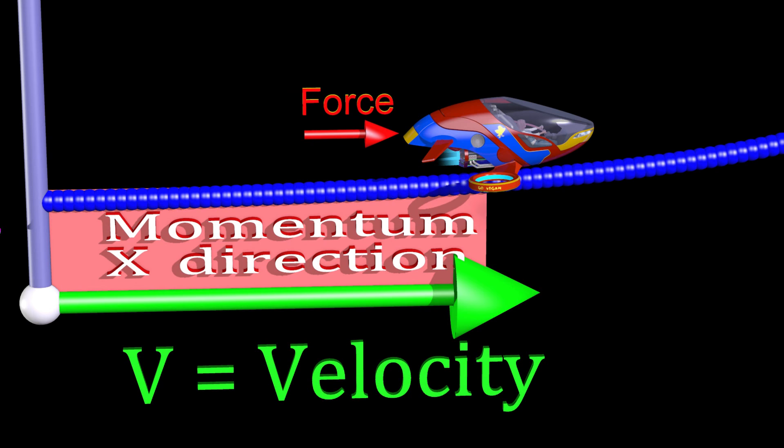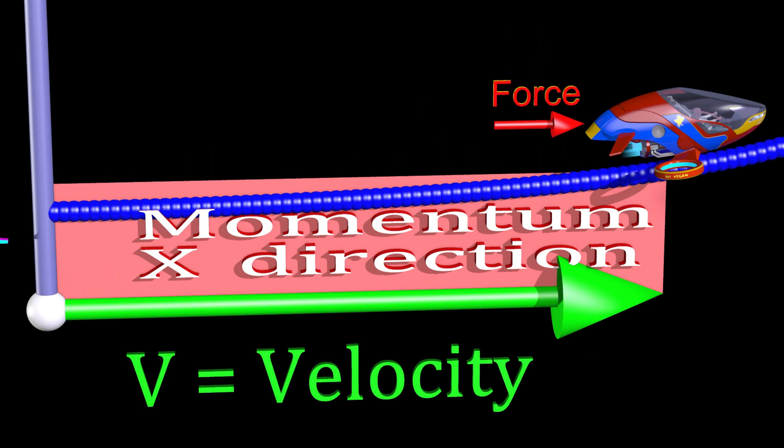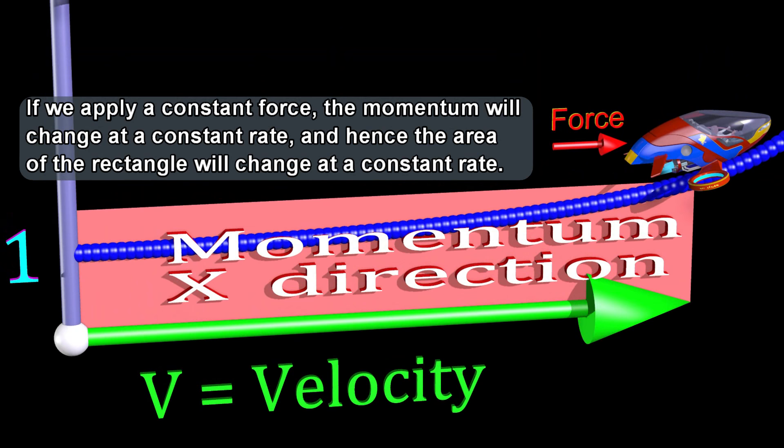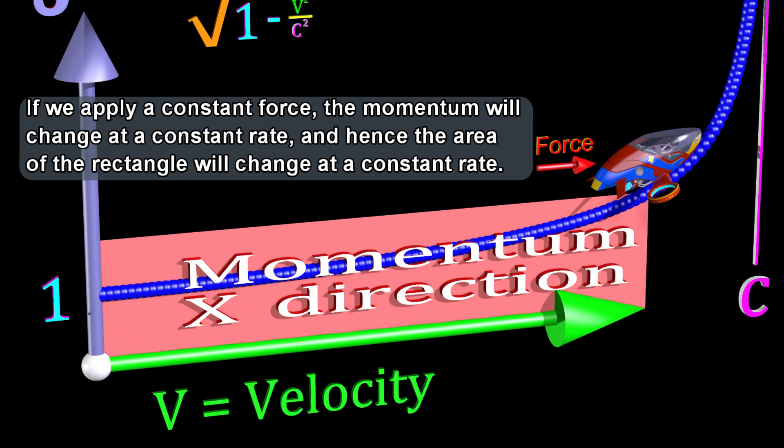The momentum in the x-direction is proportional to the area of this red rectangle. If we apply a constant force, the momentum will change at a constant rate, and hence the area of the rectangle will change at a constant rate.